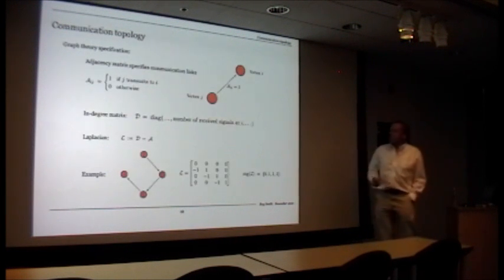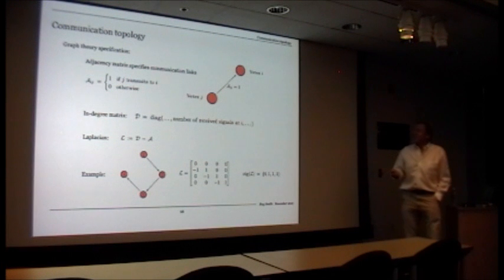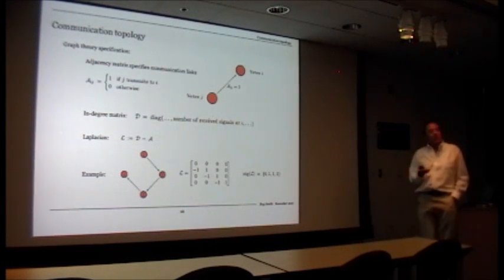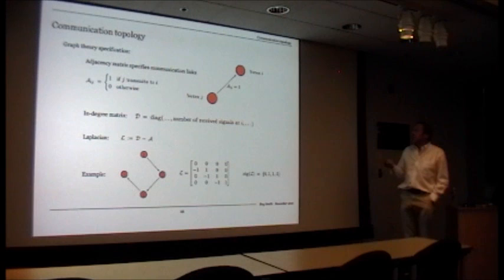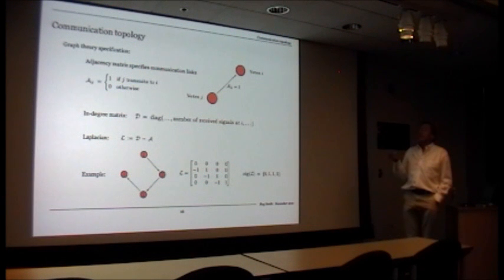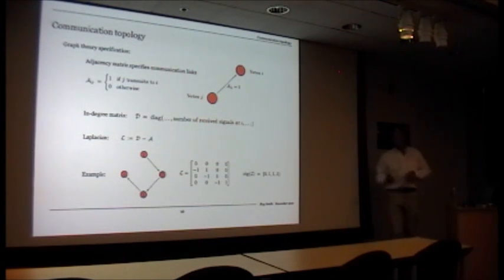A little bit on communication topology. It's fairly common practice in this area to use graph theory to specify these things. We'll use what we'll call an adjacency matrix to specify communication. I have A_IJ, and there's a one if J transmits to I, and a zero otherwise. It just says who's talking to whom in there. Think of this as your network of communication.